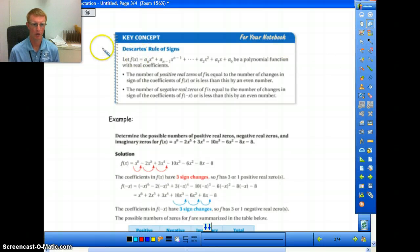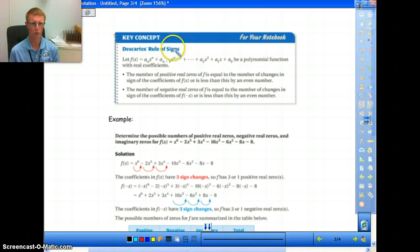We are here to finish up our section 5.7. This is going to be part three. This is all by itself. So the last thing we're going to talk about here is Descartes' rule of signs.